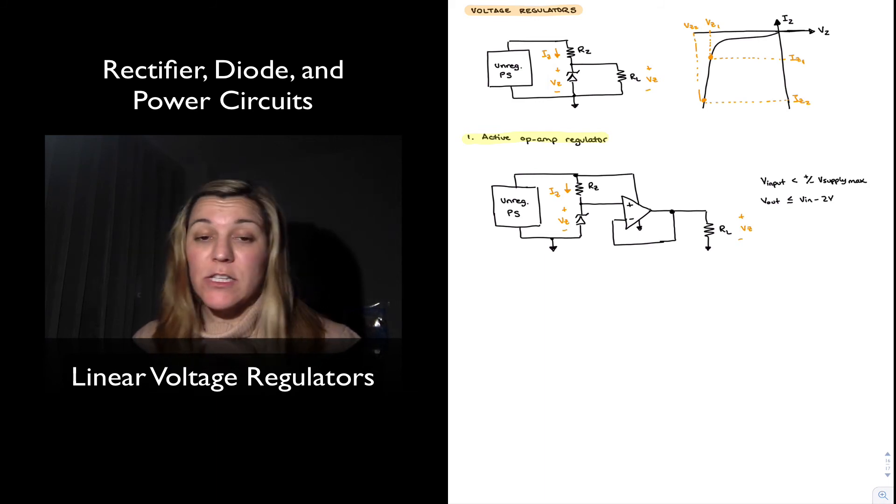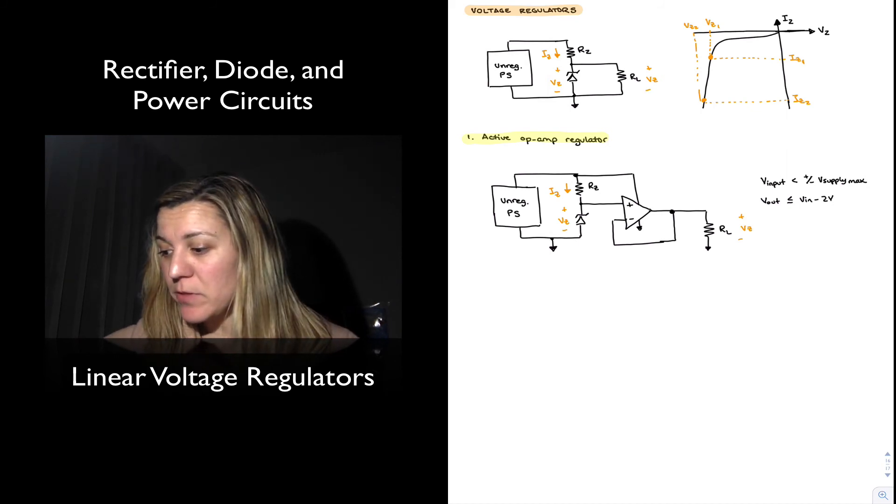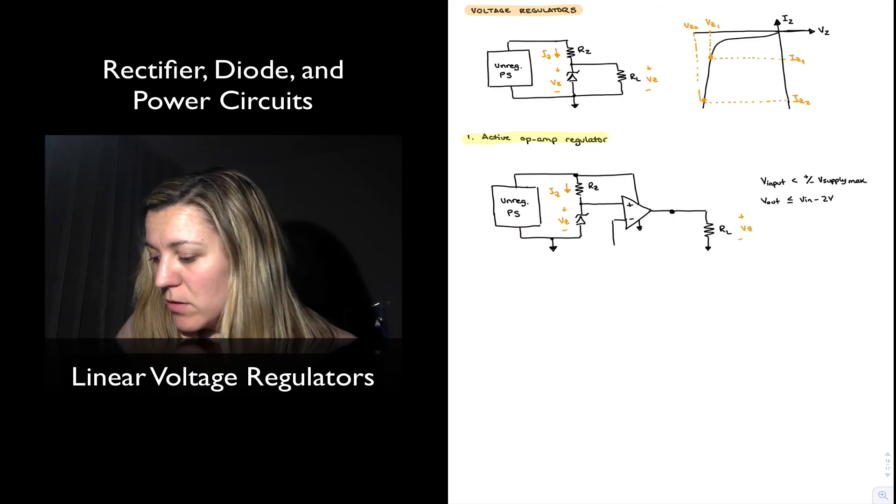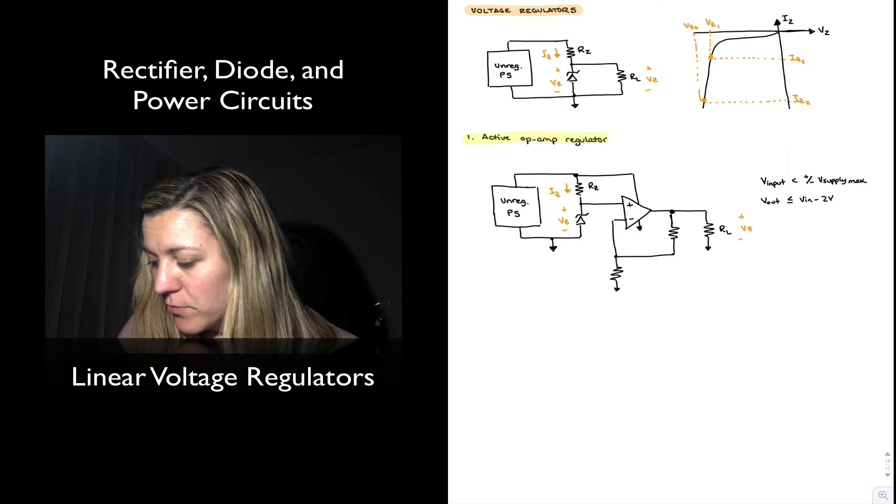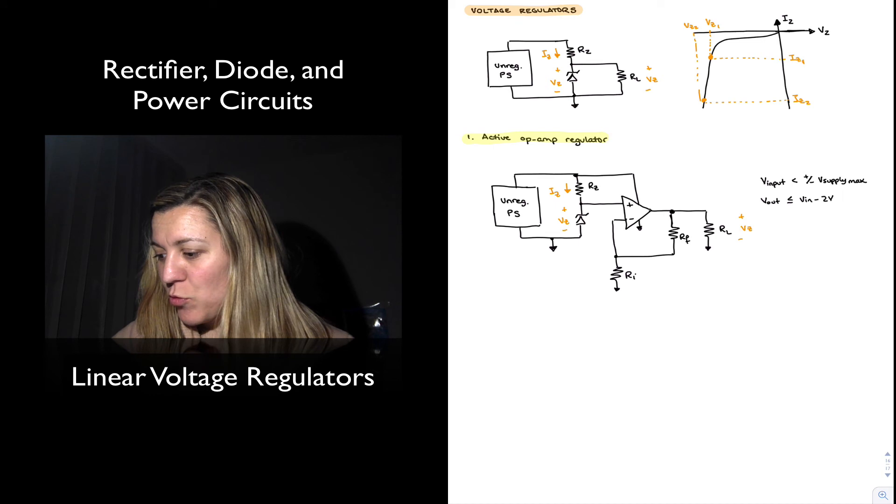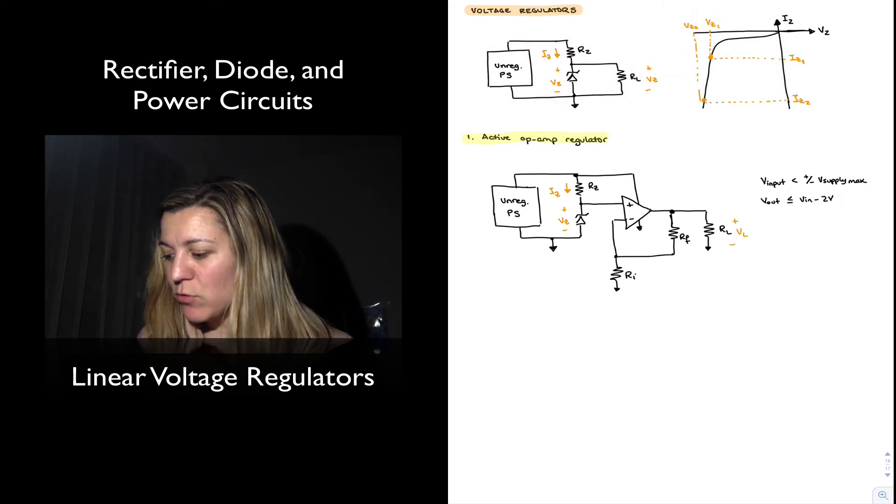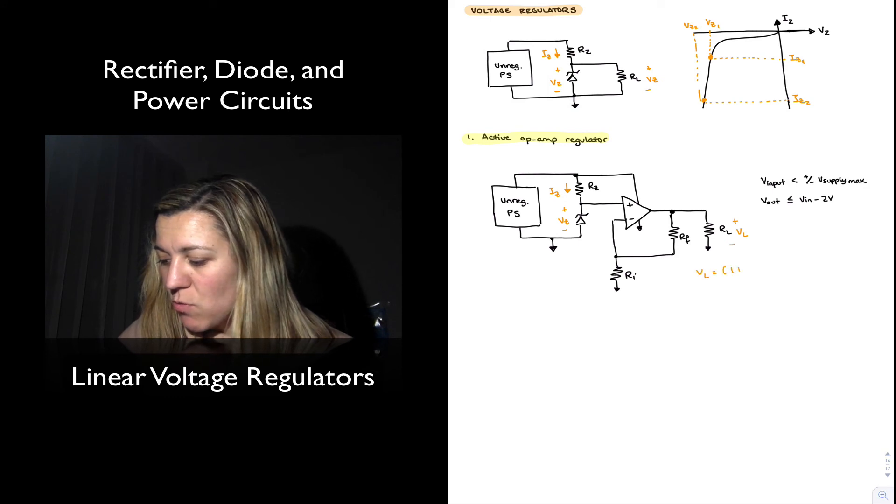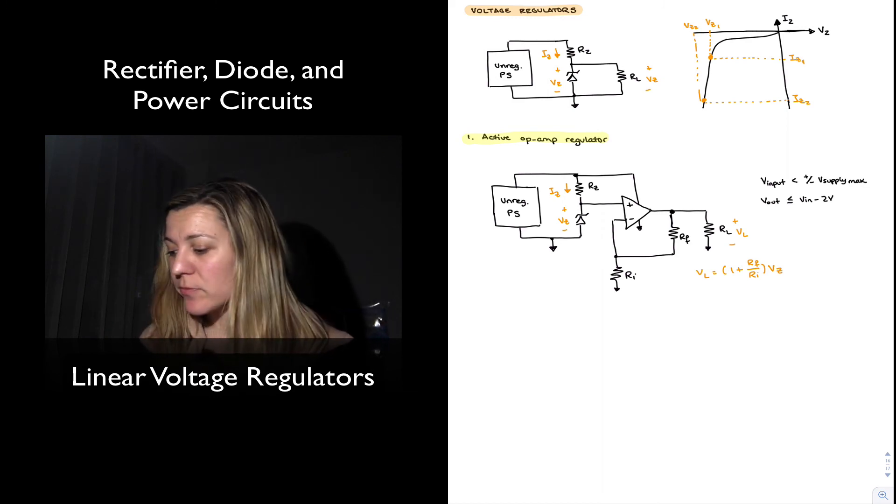Now if we wanted to turn this into a programmable voltage regulator, meaning that we can program the output voltage, we can easily do that by changing the voltage follower to be a non-inverting amplifier. If I were to do that I can simply connect a feedback resistor and an input resistor, Rf and Ri. Now basically my output voltage, which I'm going to label as Vl for my load voltage, Vl becomes equal to one plus Rf divided by Ri times my zener voltage, because this is essentially a non-inverting amplifier where the input signal that's being applied is the zener voltage, the voltage across the zener diode.